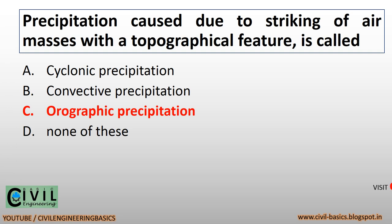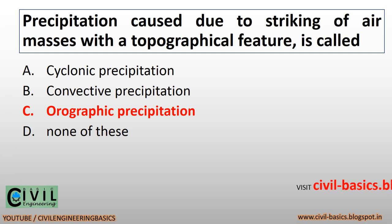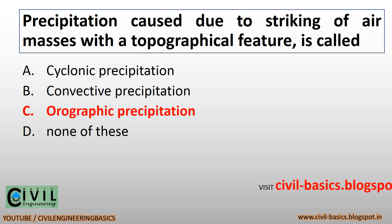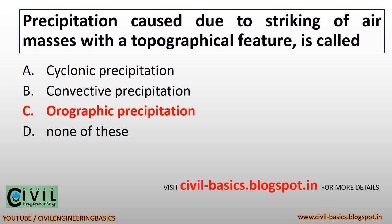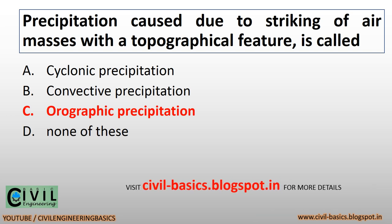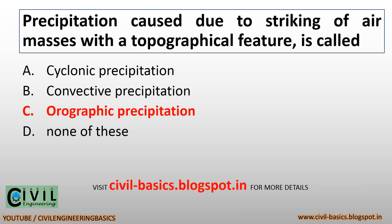Precipitation caused due to striking of air masses with a topographical feature is called orographic precipitation.